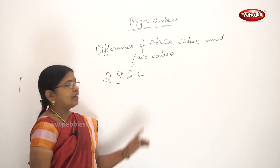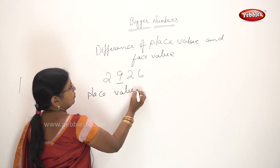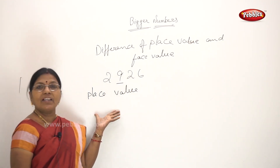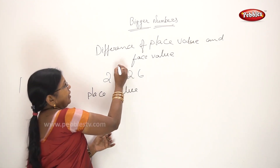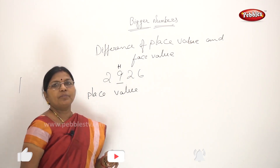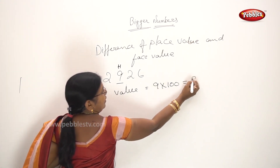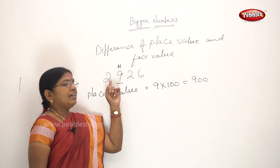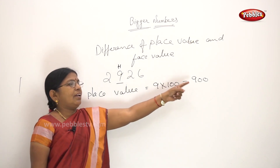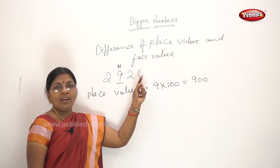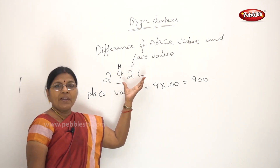The underlined number is 9. Place value: first, what is the place value? The underlined digit 9 — in which place is it located? It is in the 100s place. So the place value is 9 into 100, which equals 900. What value is it? 900. Now, if it is in the 1s place, then the place value is 1 into 9, which equals 9.